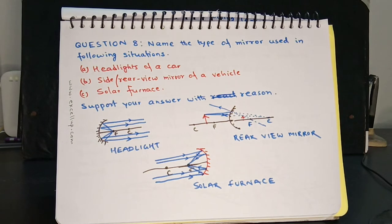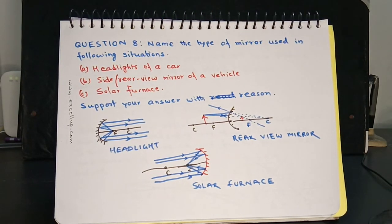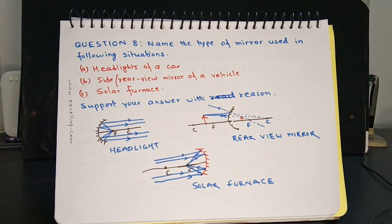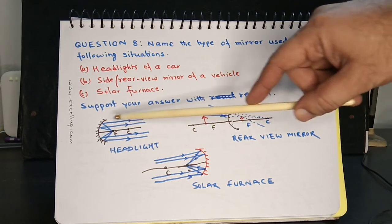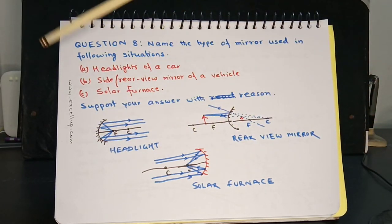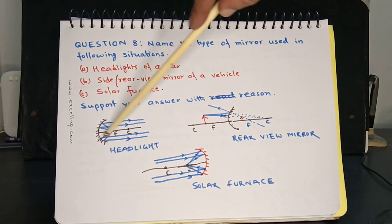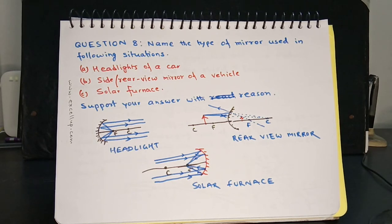Question 8: Name the type of mirror used in the following situations: a) headlight of a car, b) side or rear view mirror of a vehicle, c) a solar furnace. For the car headlight, a concave mirror is used (in practice, parabolic shape). The bulb is placed at the focus so that light rays emerge parallel to the principal axis, giving a straight beam of light.